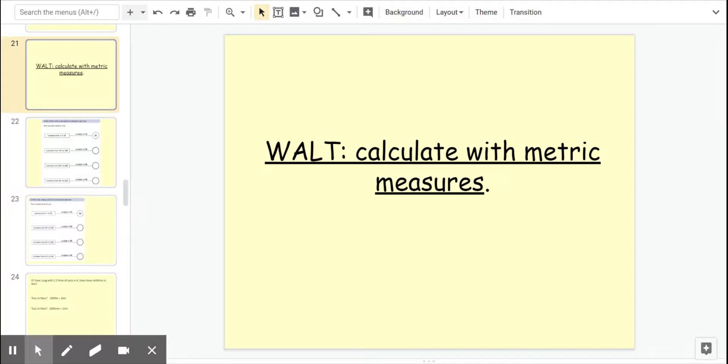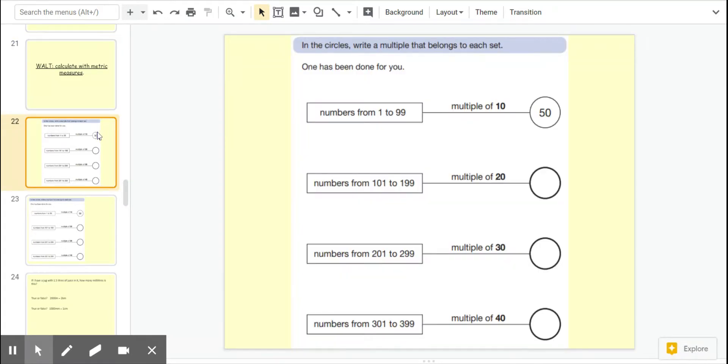Happy Wednesday, Year Six. Today's lesson is carrying on with converting units. Our goal is to calculate with metric measures, so this will require some adding, multiplying, subtracting, etc. The question is: in the circles, write a multiple that belongs to each set. One has been done for you.